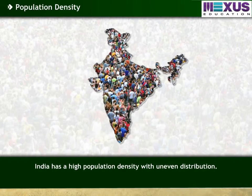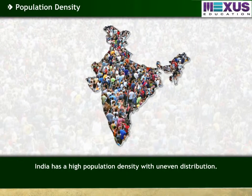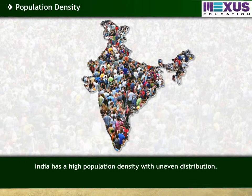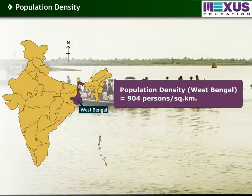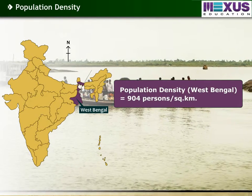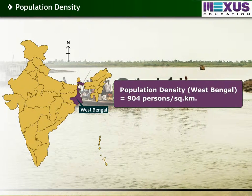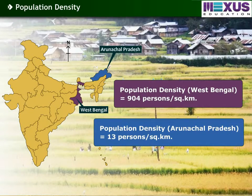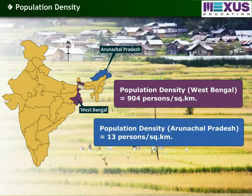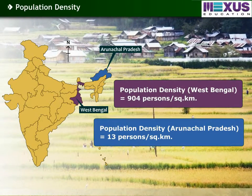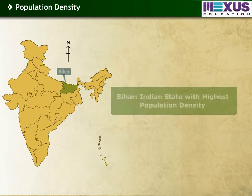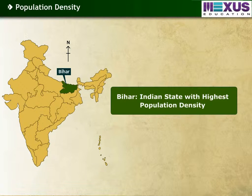India has a high population density with uneven distribution. For example, West Bengal has a density of 904 persons per square kilometer, while Arunachal Pradesh has a density of only 13 persons per square kilometer. The state of Bihar has the highest population density in India.